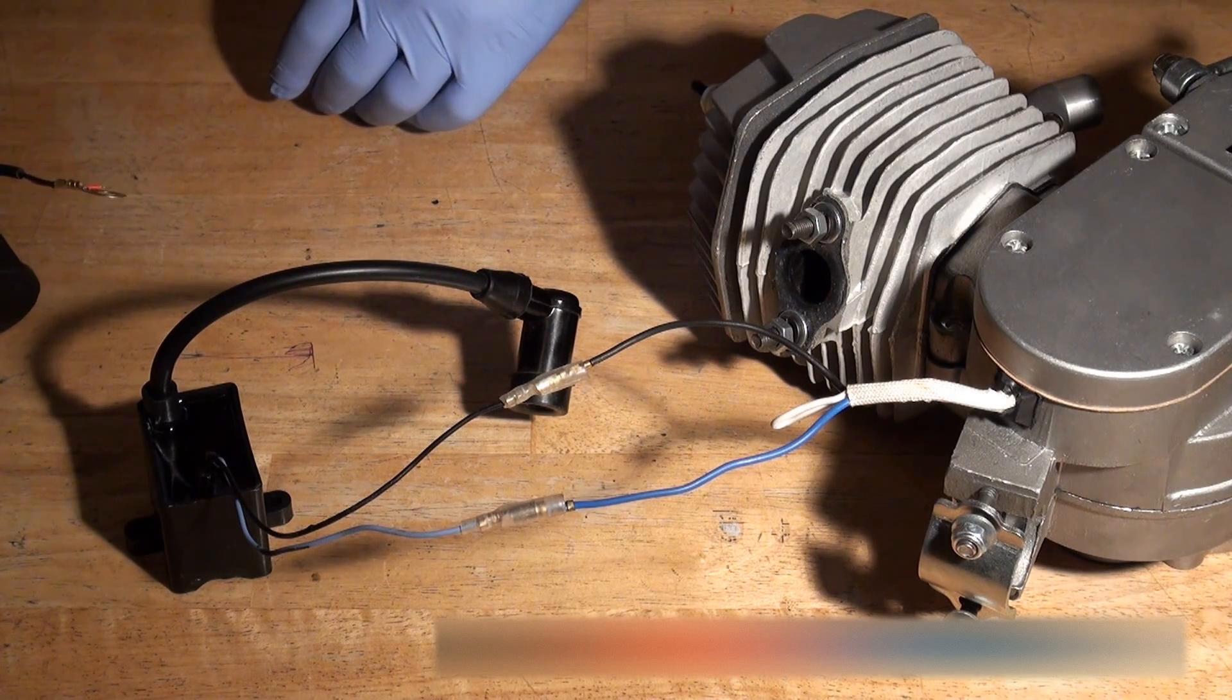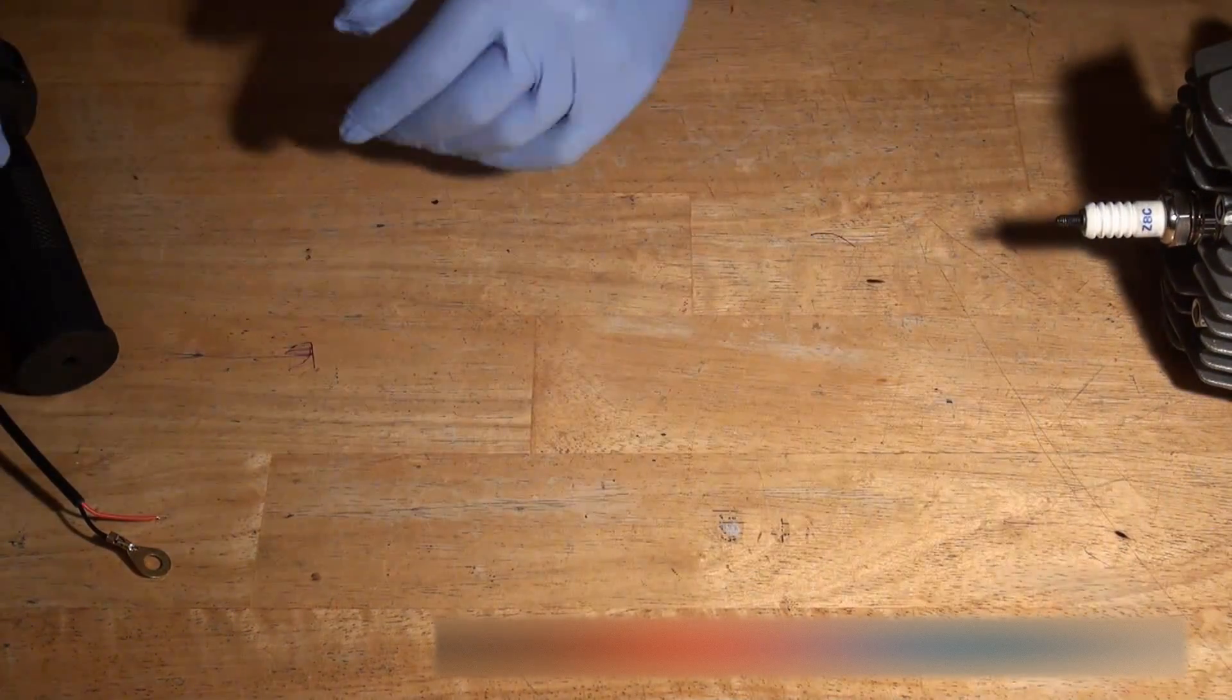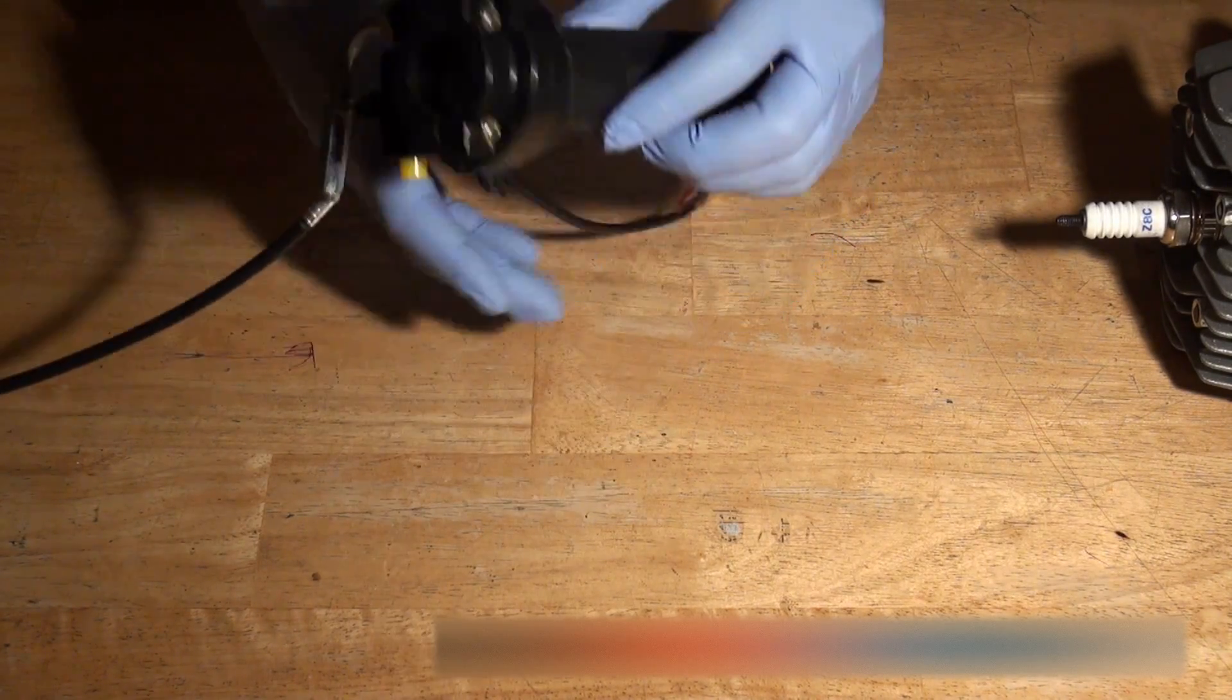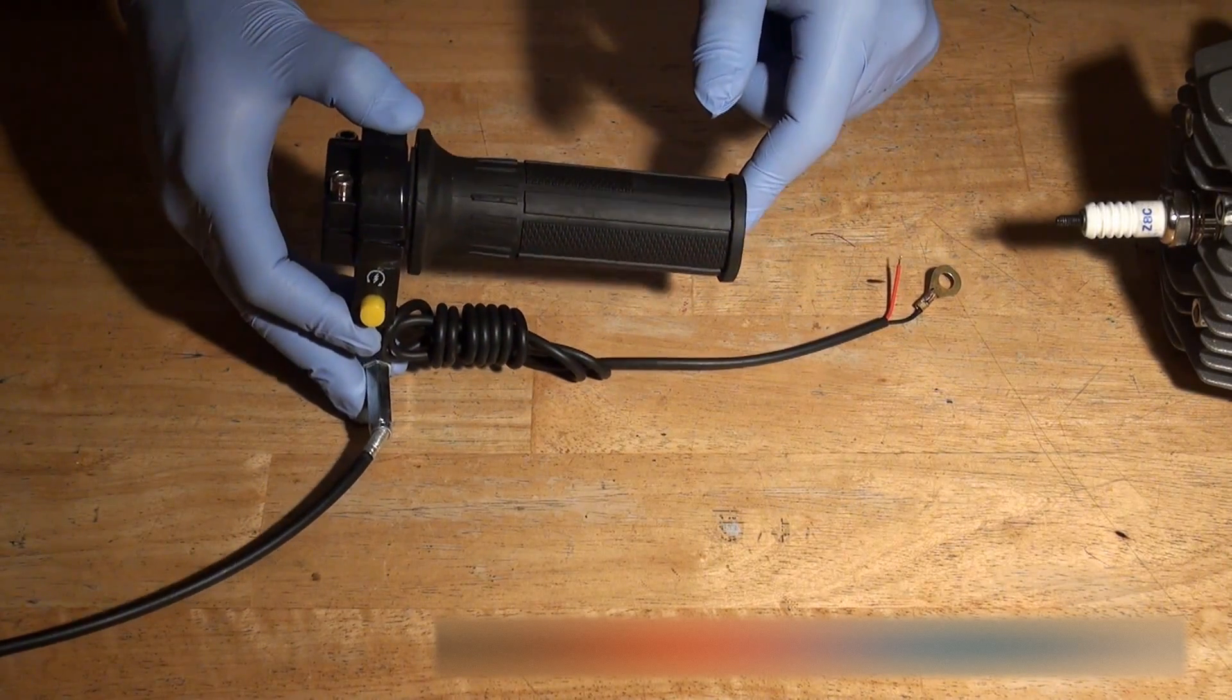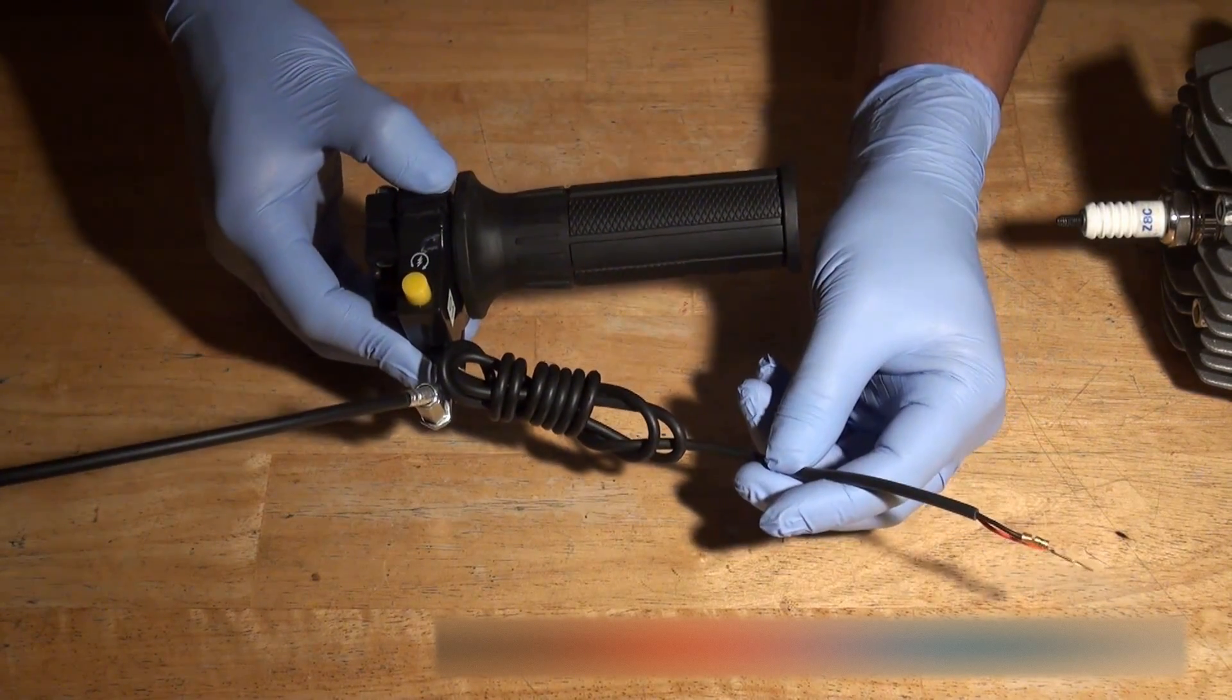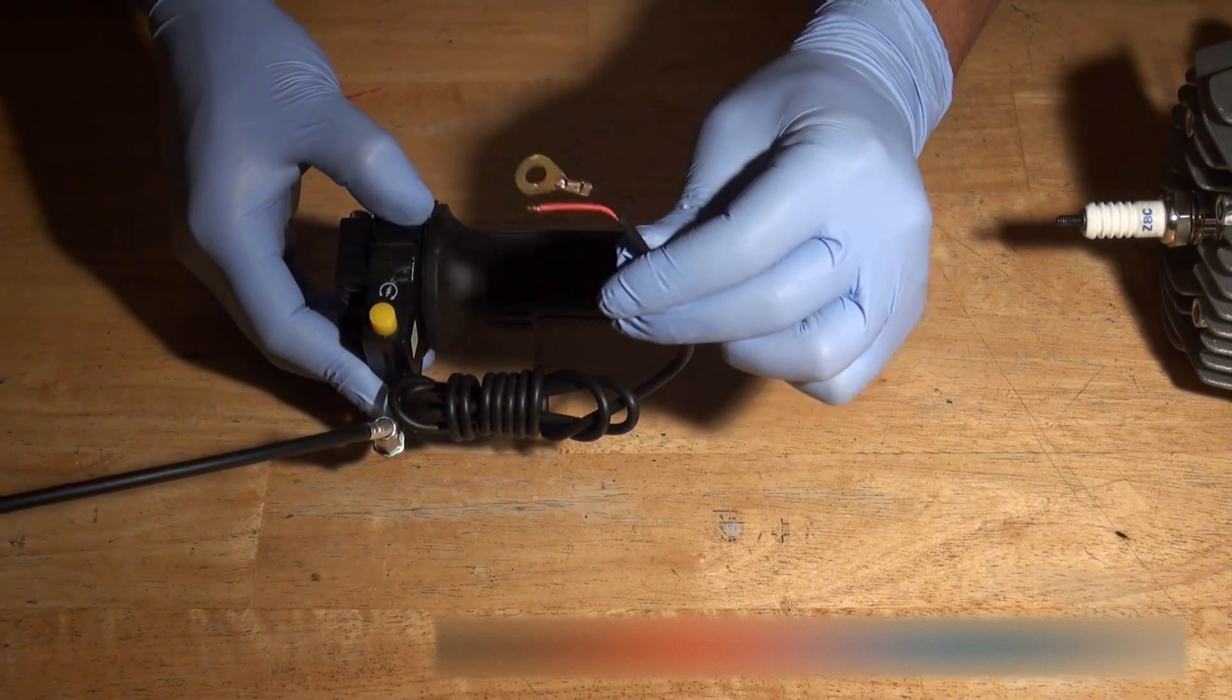If we move these two aside for now, this is the throttle which comes with our bicycle engine kit, and it's got a kill switch wire which comes off the bottom as you can see here. Now there are two wires on the end of the kill switch: a black wire and also a red wire.